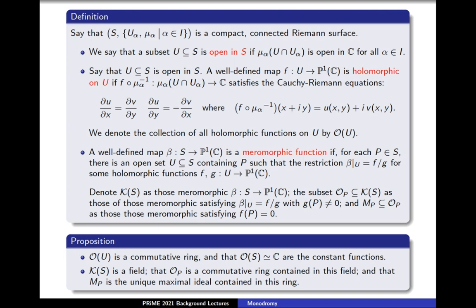We say that a well-defined map beta from S to P1(C) is called a meromorphic function if, for each P in S, there is an open set U in S containing P such that the restriction of beta to U equals F over G for some holomorphic functions F and G from U to P1(C). We denote by K(S) those meromorphic beta from S to P1(C). The subset O_P in K(S) denotes those meromorphic functions satisfying beta restricted to U equals F over G with G(P) not equal to 0, and M_P in O_P denotes those meromorphic functions satisfying F(P) equals 0.